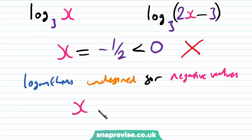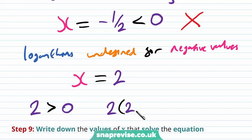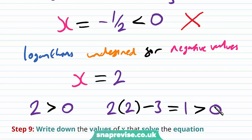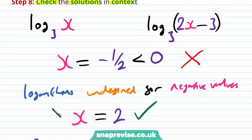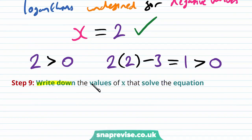But if we consider x equal to 2, the other possible solution, we see that 2 itself, the value of x, is strictly positive. And 2 lots of the value 2 minus 3, i.e. 2x minus 3, is equal to 1, which is also strictly positive. And therefore this is a solution because both of the logarithms are defined. Our last step is to write down the values of x that solve the equation. The only value of x that solves the equation is x is equal to 2.